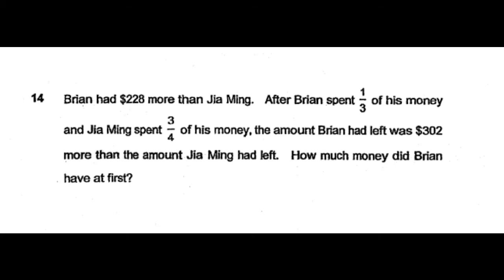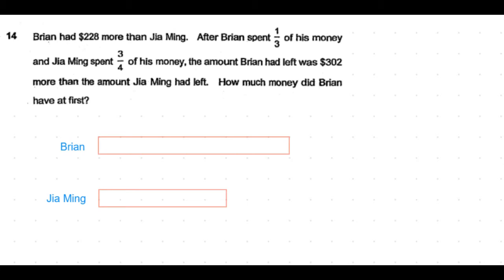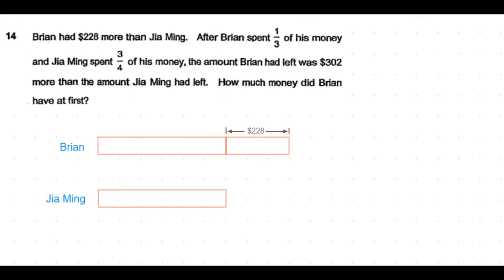How much money did Brian have at first? So let's draw Brian and Jia Ming. Brian had $228 more than Jia Ming, so let's mark that. Brian spent 1/3 of his money, so his money should be divisible by 3.